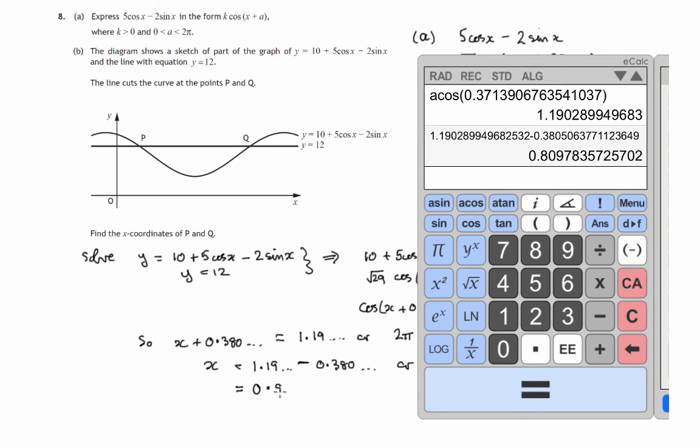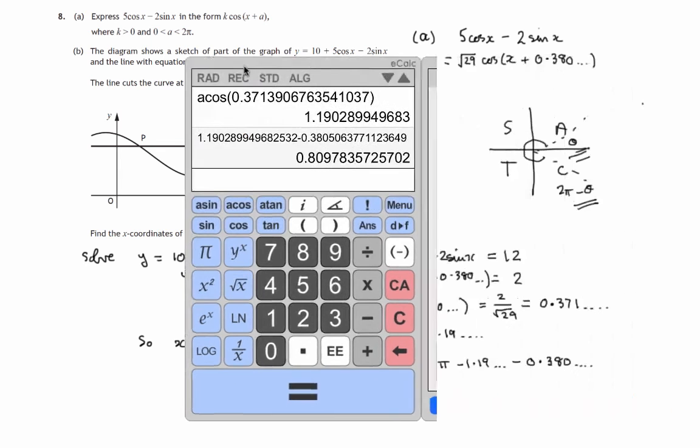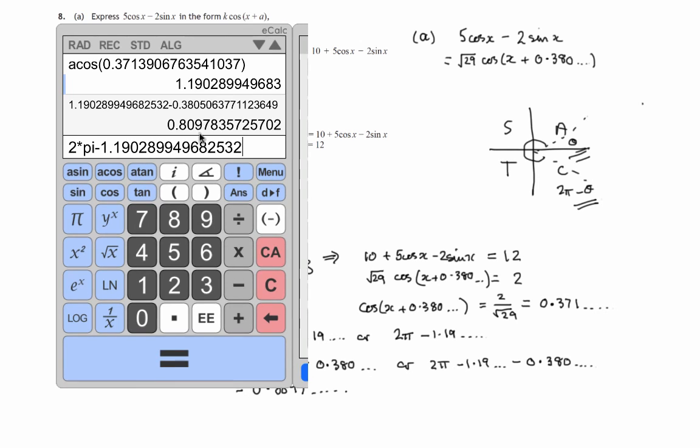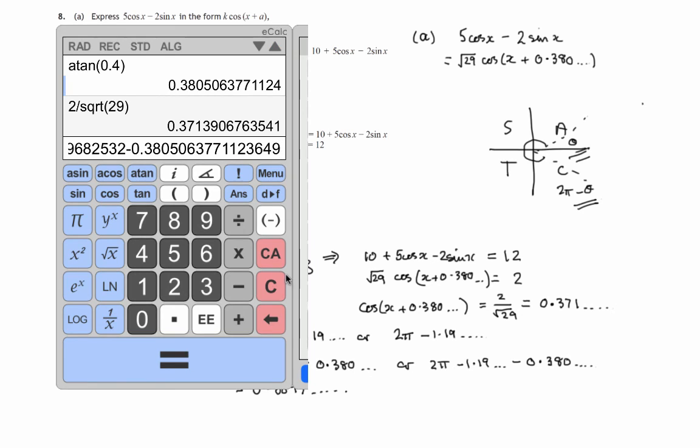And the second one we'll get by taking 2 times pi, we want to subtract 1.19, that's this number here, and also subtract the 0.380 number. Let's see what that comes to.